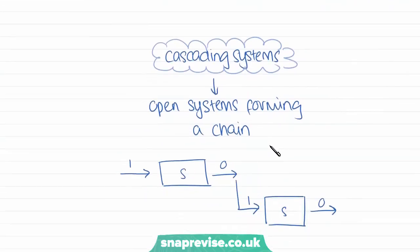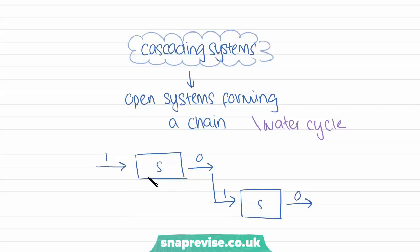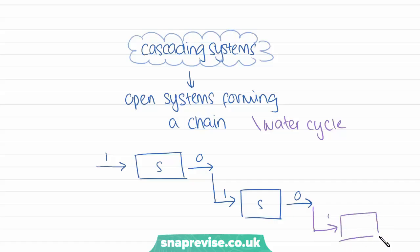Lastly, we're going to look at cascading systems. This is where we have a series of open systems which form a chain, and this happens in many cycles or processes on Earth, including the water cycle, which we'll look at in the next few videos. A cascading system is where the outputs of one system feed into the inputs of the next system. So we have inputs, store, and outputs for one open system, and those outputs feed into the inputs of the next system, and this can continue further on. Cascading is almost like a waterfall — it cascades downwards.